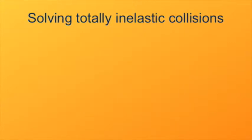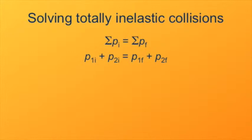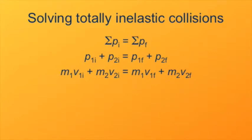Here's how we can mathematically treat totally inelastic collisions. We begin with a general statement of conservation of momentum: the total momentum of the system initially, on the left, is equal to the total momentum of the system after the collision, on the right. For two objects in the system, we can break down the total momentum into the momentum of object 1 and object 2, expressing each as mass times velocity. Bear in mind this applies to every kind of collision.